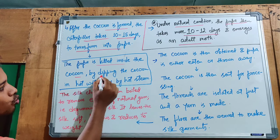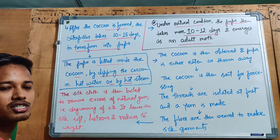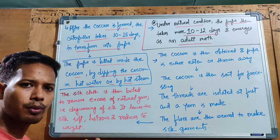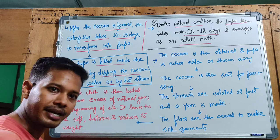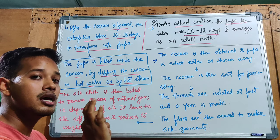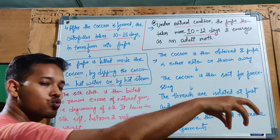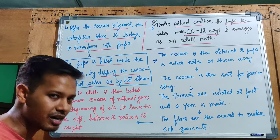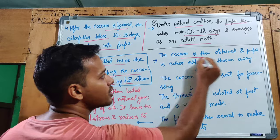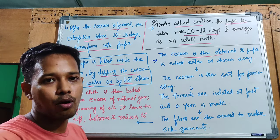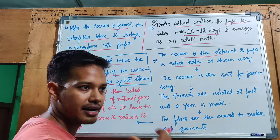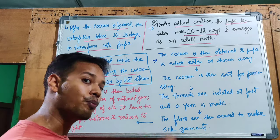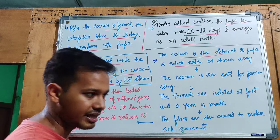To obtain silk, the pupa is killed inside the cocoon by dipping the cocoon in hot water or by hot steam treatment. The pupa dies, and then we take the cocoon for processing. The dead pupa is removed — in some tribes, the pupa is eaten as food, either raw or fried.